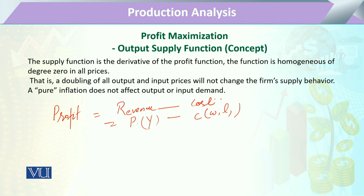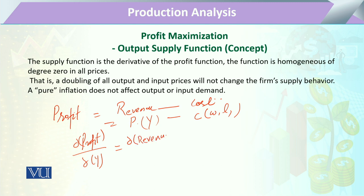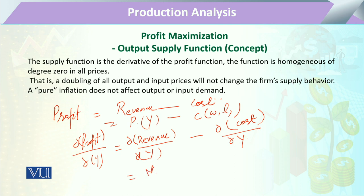We can examine how profit changes by taking the first derivative of the profit function with respect to change in output. This gives us the derivative of revenue with respect to change in output minus the derivative of the cost function with respect to change in output, which yields marginal revenue minus marginal cost.